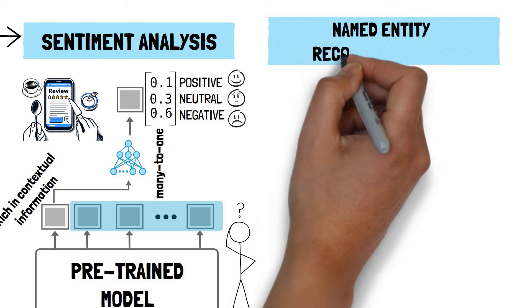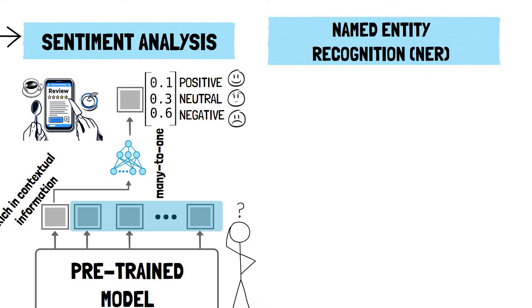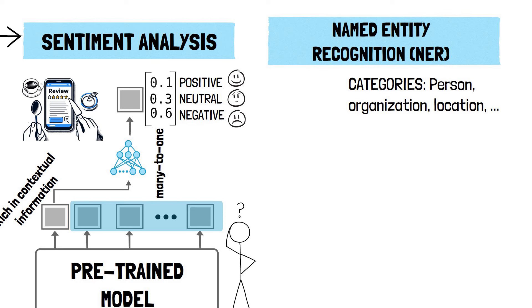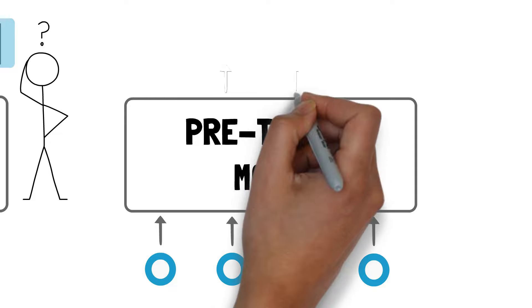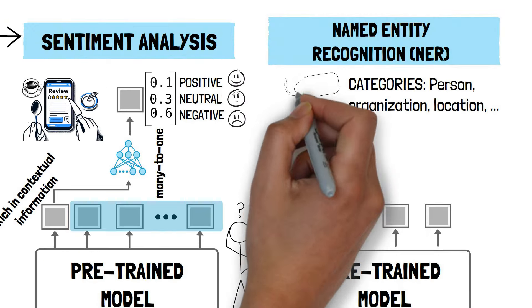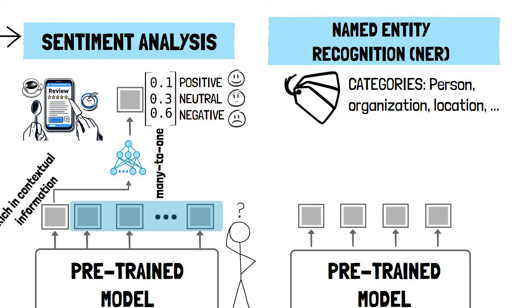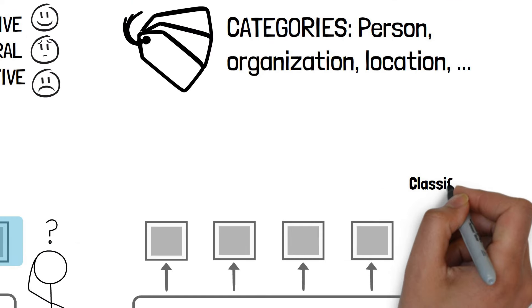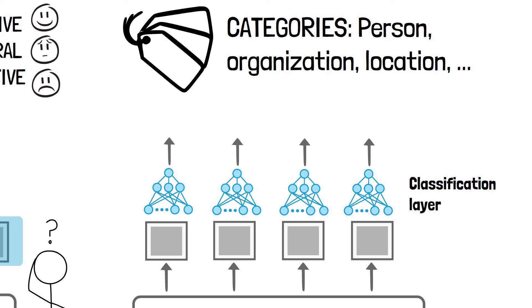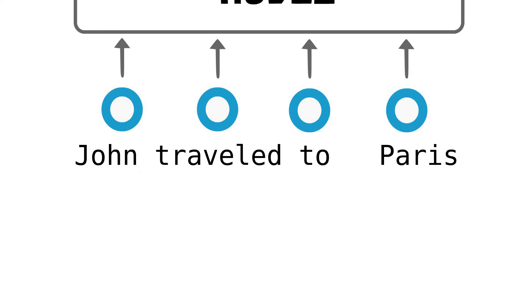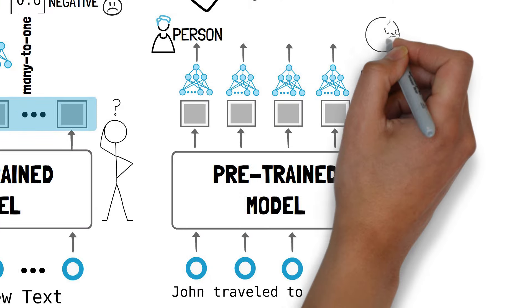For completeness, let's consider a many-to-many task — for example, named entity recognition. Named entity recognition consists in categorizing key information in text into predefined categories such as the names of persons, organizations, locations, etc. For this task, BERT processes each token of the input sentence and assigns it a label indicating its category, requiring a different output layer compared to the classification task. We add a token classification layer that learns to assign a label to each input token. So if we feed a sentence like 'John traveled to Paris,' BERT would output labels indicating John as a person and Paris as a location.